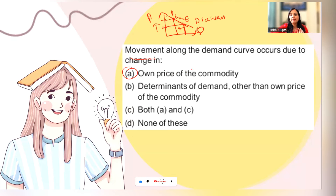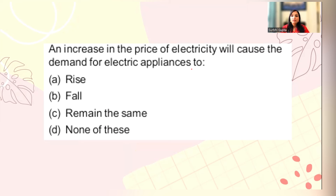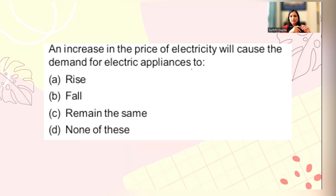An increase in price of electricity will cause the demand for electric appliances to do what? If electricity is expensive, you will reduce the use of electric appliances because they become costly to run. So the demand for electric appliances will fall.